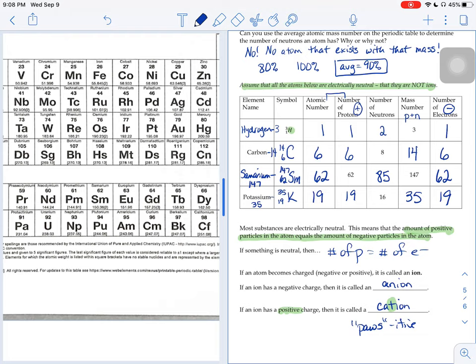So on the next page, when we come back, we're going to look at how you can figure out protons, neutrons, and electrons for ions.